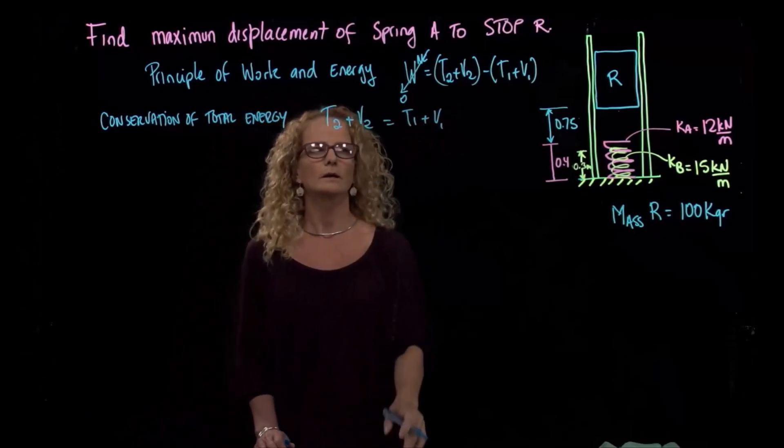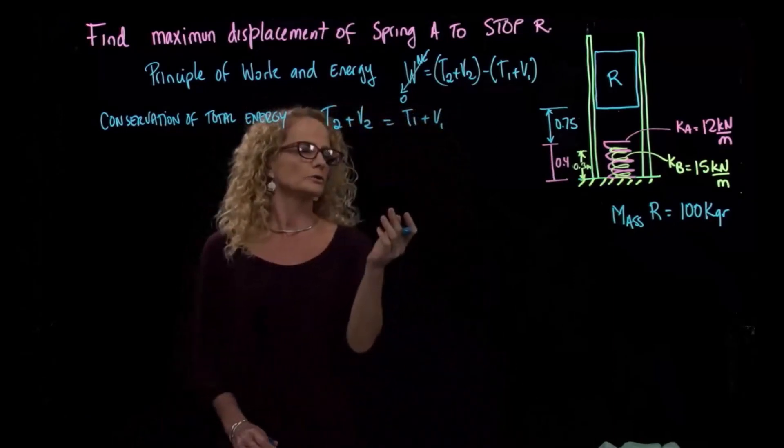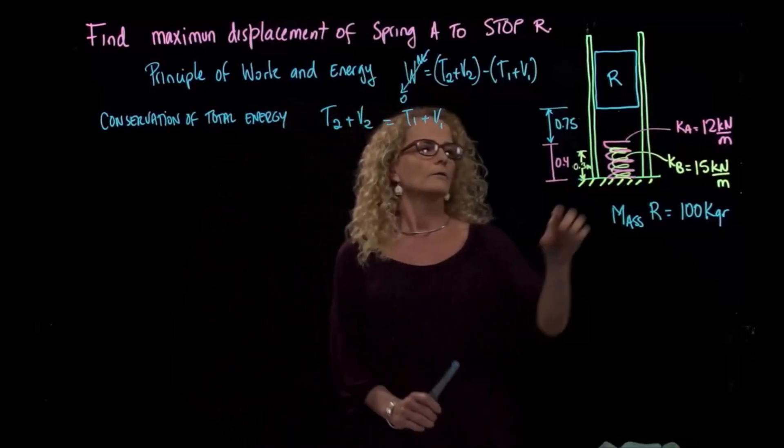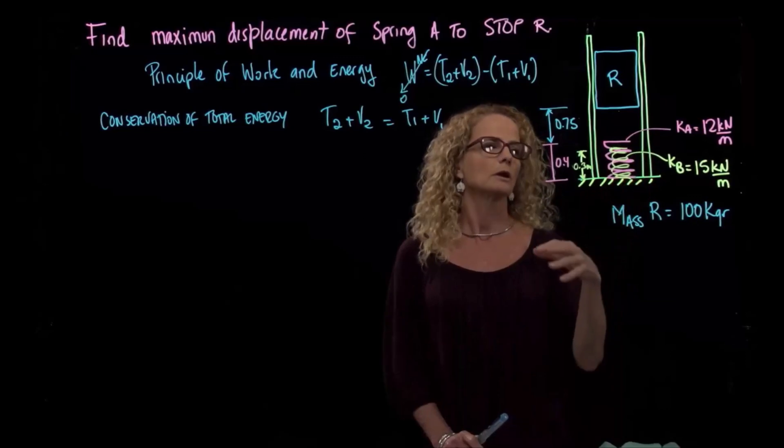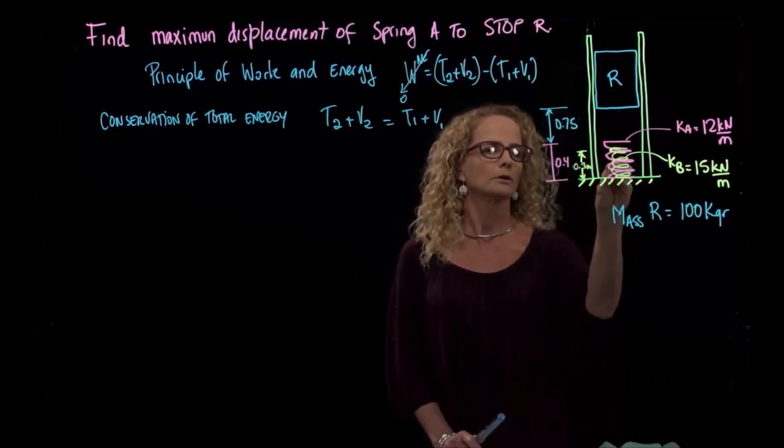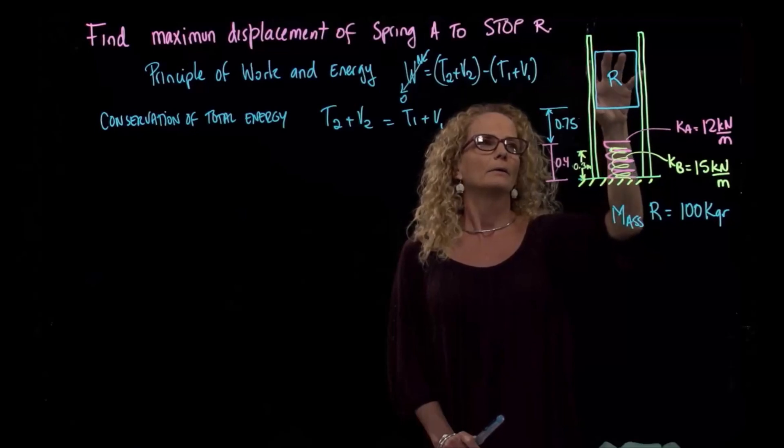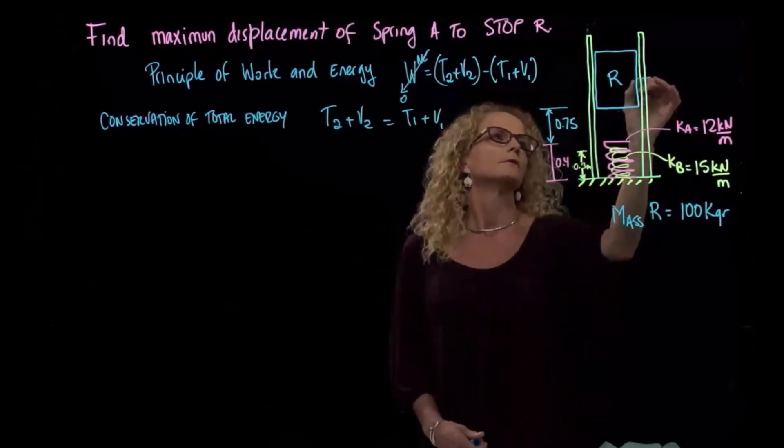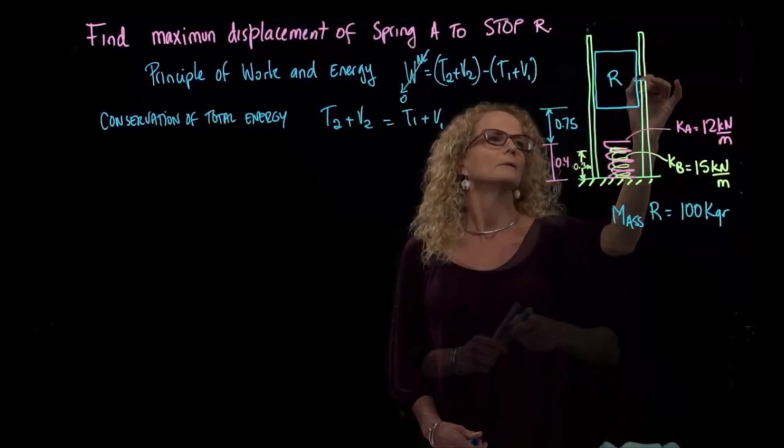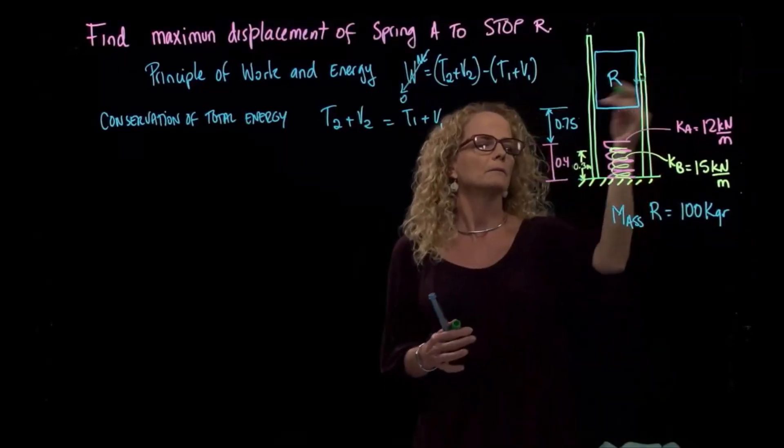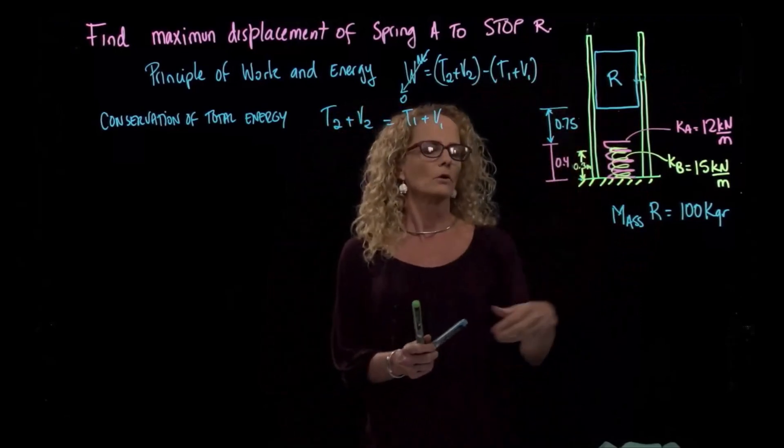Between position one and position two, we have T2 plus V2 equals T1 plus V1, being T the kinetic energy and V the potential energy. Let's analyze our positions. Our position one is where we have both springs that are unstretched. They are not generating any forces, but we have the block that is fixed here. So we release the block in position one. If we had a pin, we took that pin out and let the block go down.